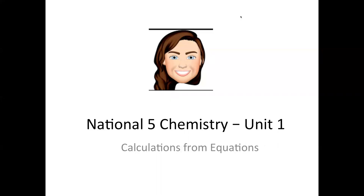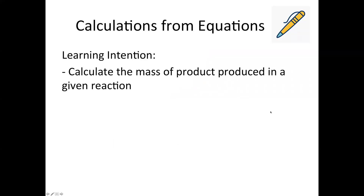Hello. In this video I'm going to take you through some calculations from balanced equations, which is part of Unit One in the National 5 Chemistry course. This video would also be helpful for revision before you start more calculations for the Higher Chemistry course. By the end of this video, hopefully you'll be able to calculate the mass of a product produced in a given chemical reaction. When you're given these calculations in an SQA assessment, you will be given the balanced chemical equation, so you don't have to come up with the chemical equation yourself.